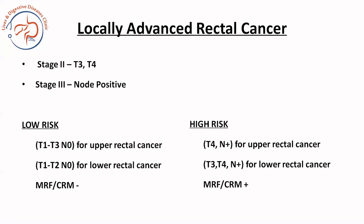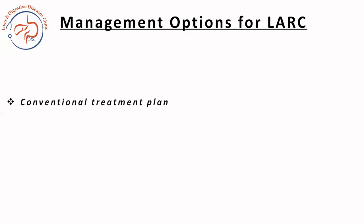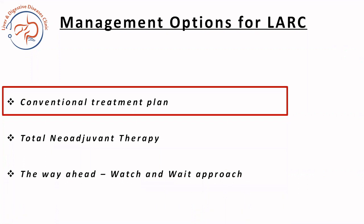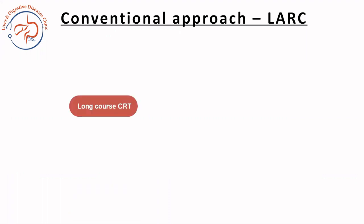When we talk about management options for locally advanced rectal cancer, we have the conventional treatment plan, then the upcoming total neoadjuvant therapy, and the aim of all these plans is the watch and wait approach. All these treatment plans essentially aim at organ preservation, because we would like patients to escape surgery and still have excellent survival and prognosis. Let us see the conventional treatment plan first — we have detailed this in another video, but you need to be aware of it to understand total neoadjuvant therapy.